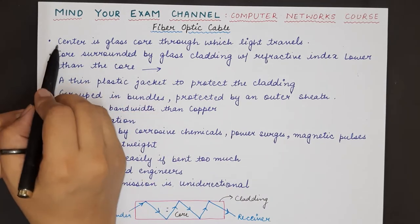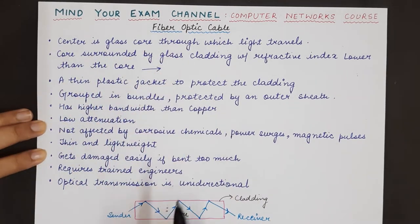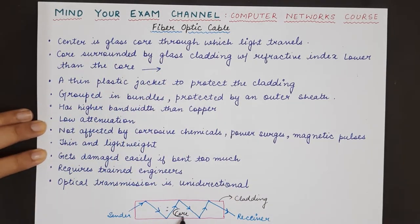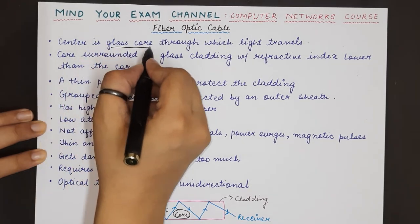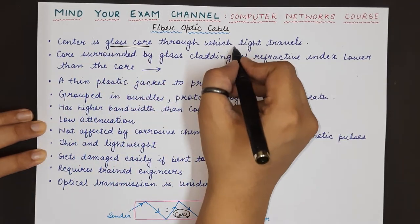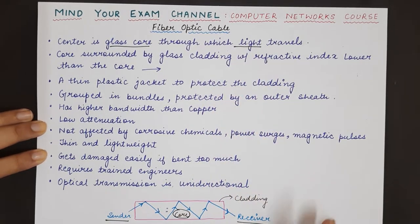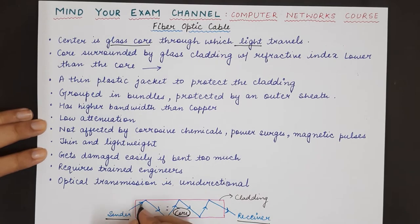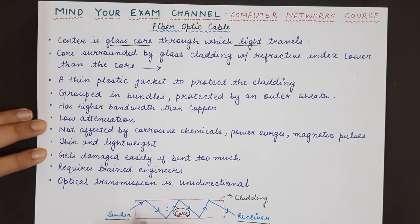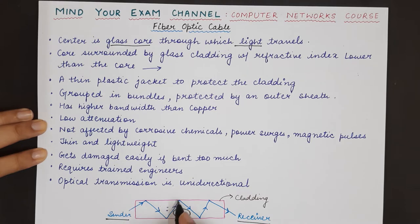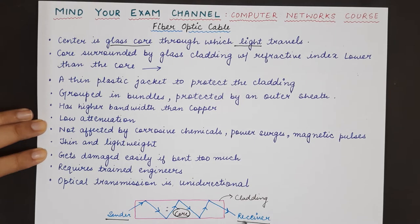The center of a fiber optic cable is made of a glass core, and this glass core is the one through which light actually travels. We have a sender and a receiver — the sender sends data in the form of light into this glass core, and this light travels through the glass core to reach the receiver on the other end.